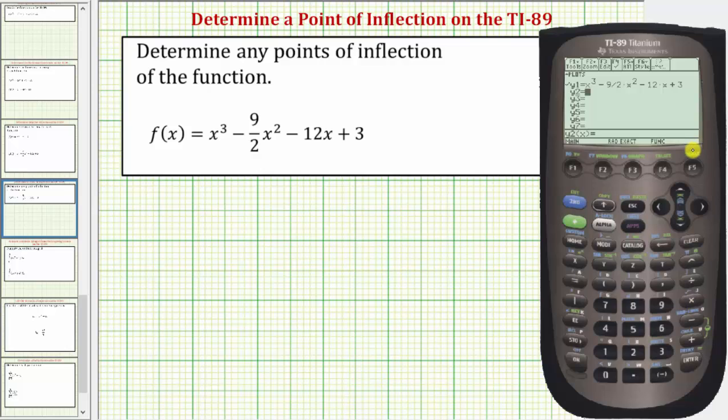Now let's try graphing this using the standard window, which means both the x and y axes would go from negative 10 to positive 10. To do this, we press F2 for zoom, and then 6 for zoom standard. If we knew we already had the standard window set, we could also press graph, which would be diamond F3.